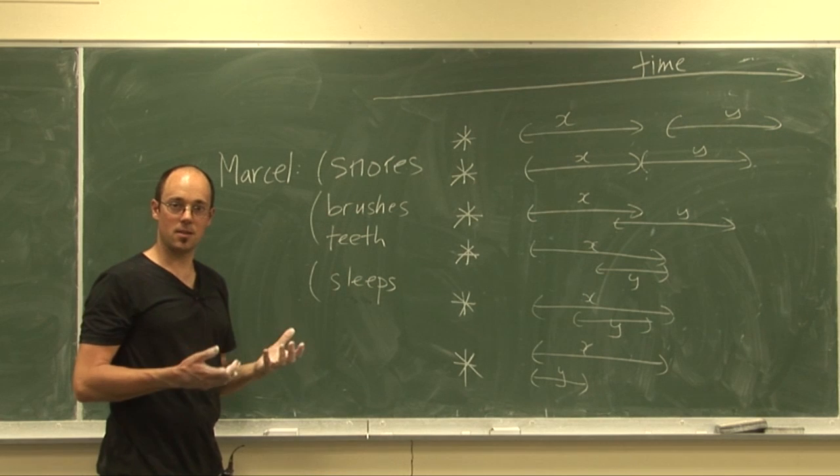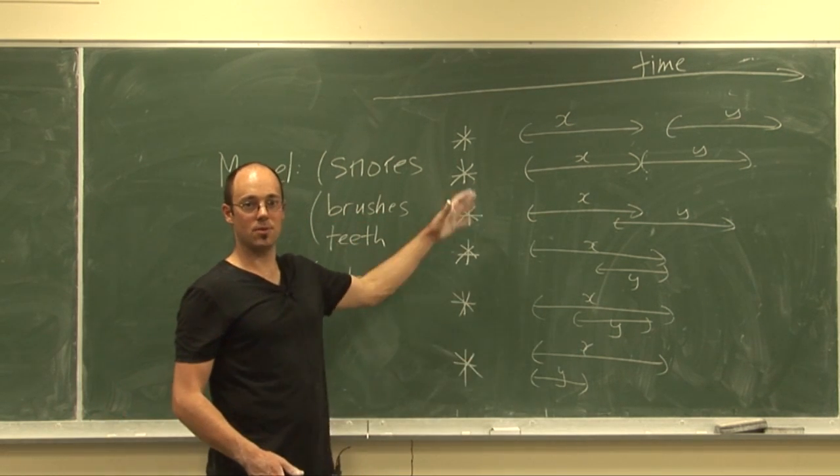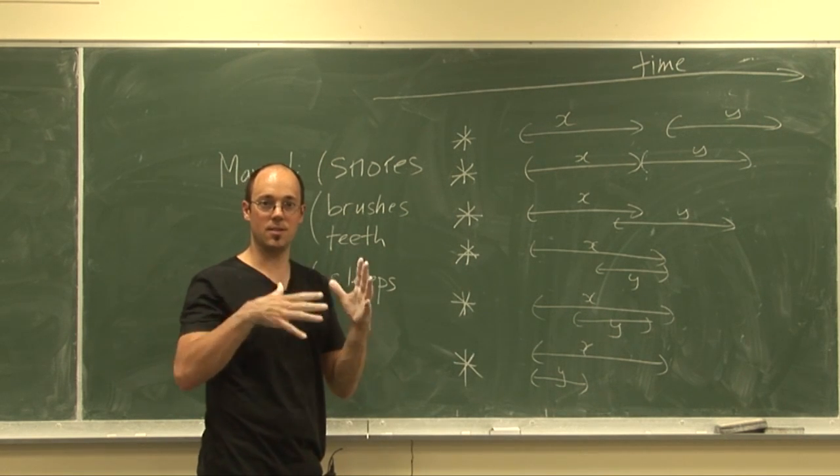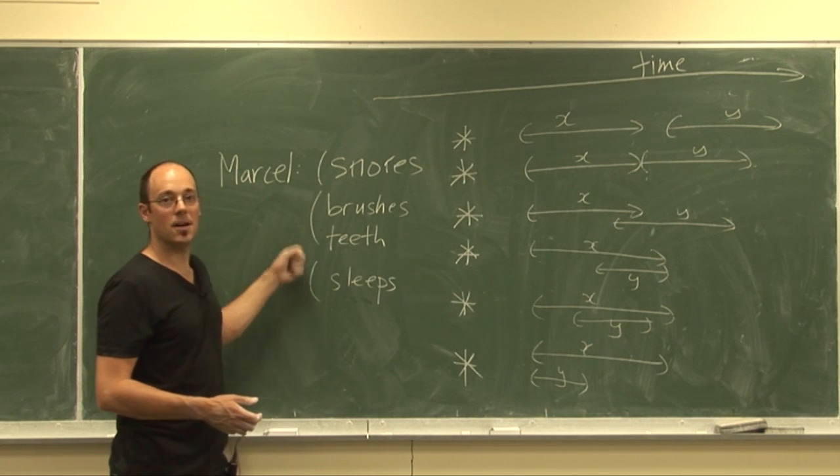So this is obvious to us but how does a computer work with this? Well we have a table. It's quite a big table. There's 13 different relationships here so we get 13 by 13 ways to compose these and we use this to reason about these kinds of events.